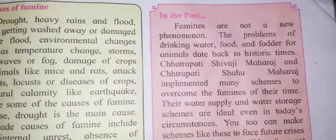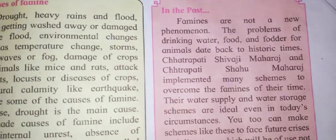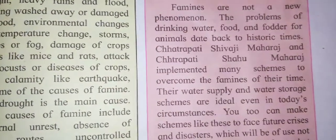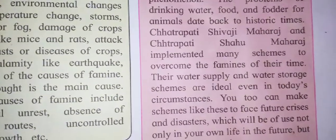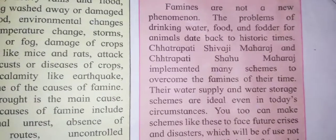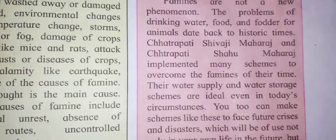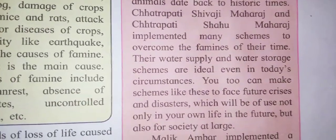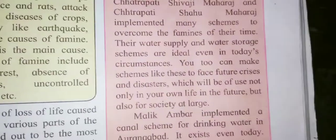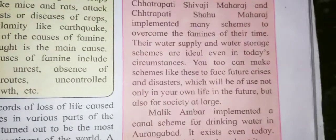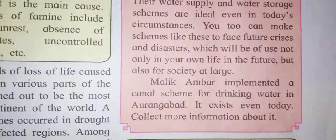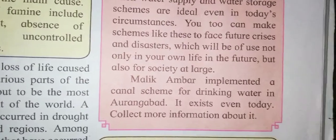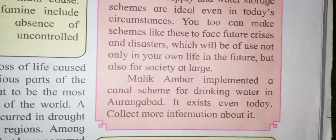Famines are not a new phenomenon. The problems of drinking water, food, and fodder for animals date back to historic times. Chhatrapati Shivaji Maharaj implemented many schemes to overcome the famine of their times. Their water supply and water storage schemes are ideal even in today's circumstances. You too can make schemes like this to face future crises. Malik Ambar implemented a canal scheme for drinking water in Aurangabad that exists even today.